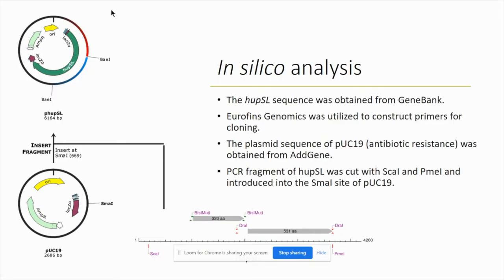The goal of our research is to genetically engineer cyanobacteria so that they produce more hydrogen. We do this by inactivating the uptake hydrogenase enzyme. To do this, we perform deletion or mutation.